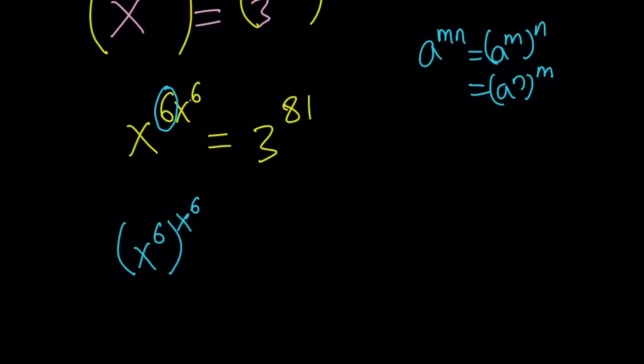And when you multiply the exponents, you get 6 times x to the 6 in the exponent. And now, what am I going to do with the 3 to the power of 81?